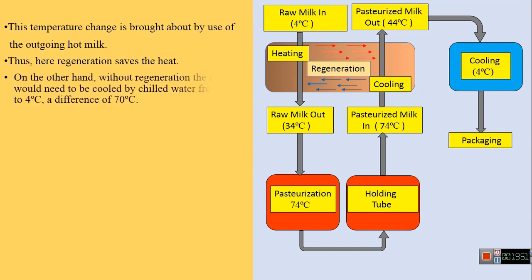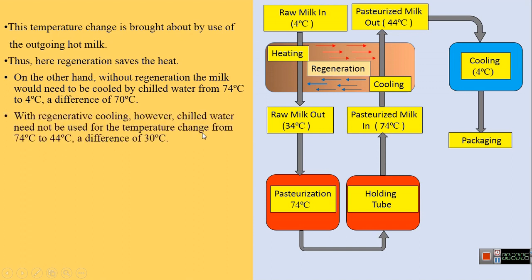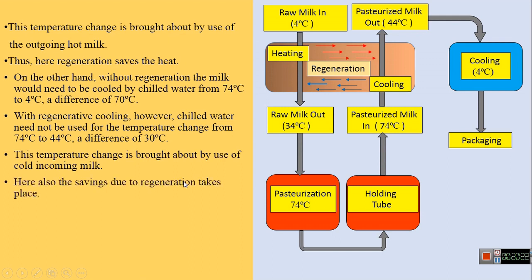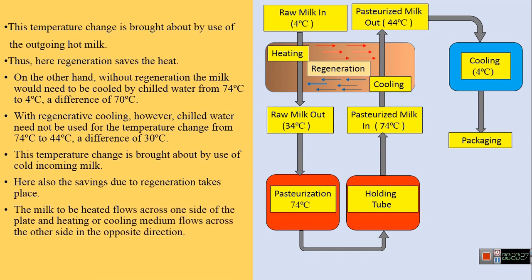On the other hand, without a regeneration system, we would have to cool the hot pasteurized milk from 74°C to 4°C using chilled water — a temperature difference of 70°C. However, in the regeneration section, chilled water is not required for reducing the temperature from 74°C to 44°C, as this is achieved by the incoming cold milk. Thus, in the regeneration system, the exchange of heat between incoming cold milk and outgoing hot milk saves energy and reduces the cost of the process.